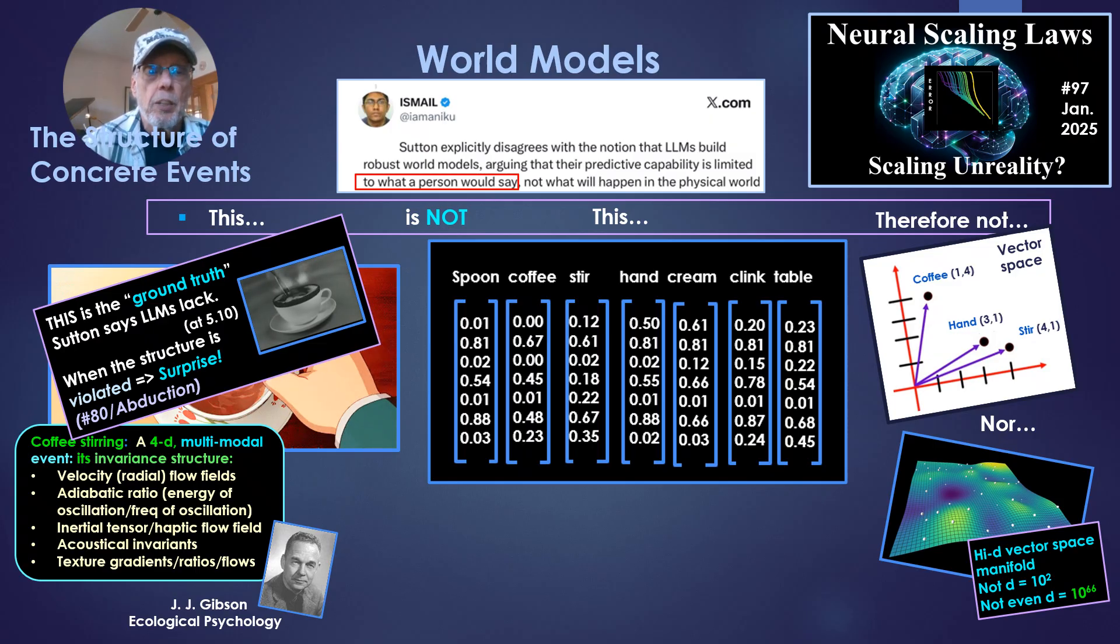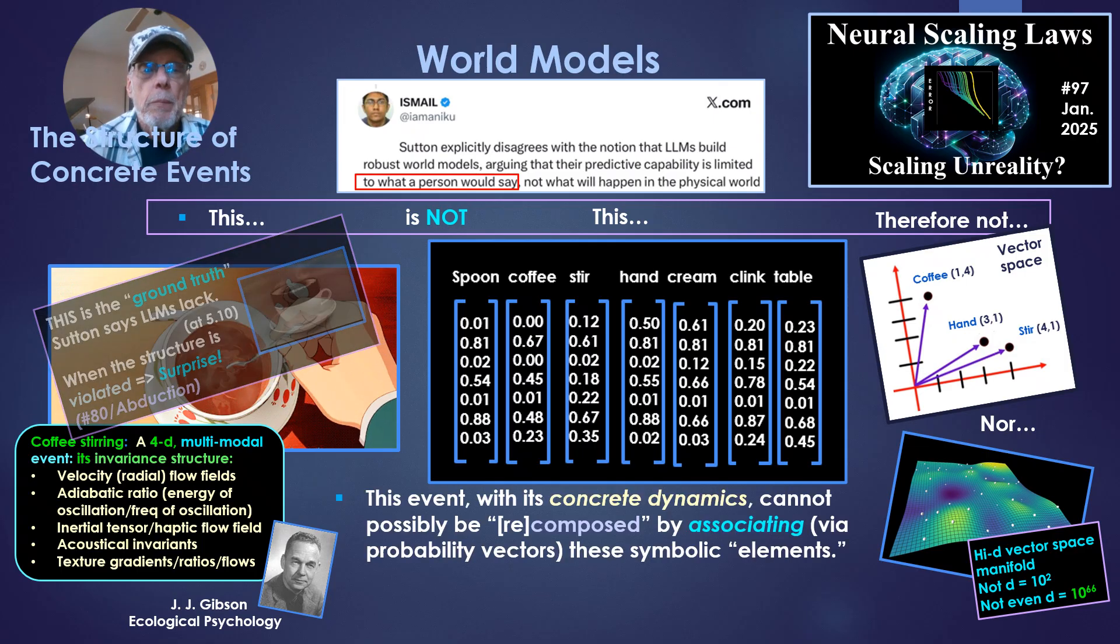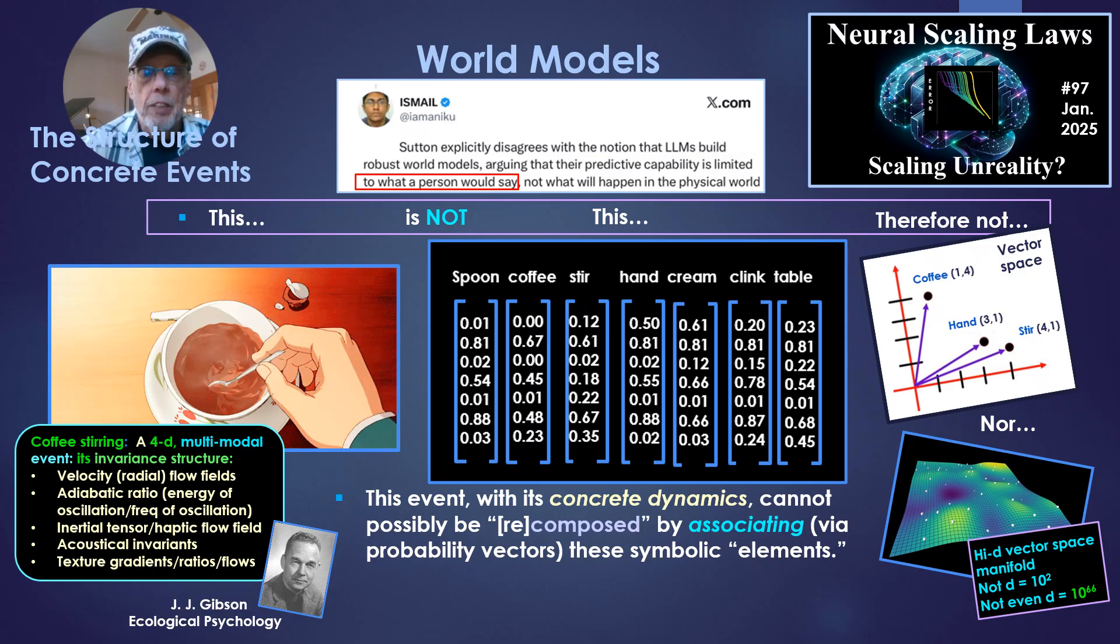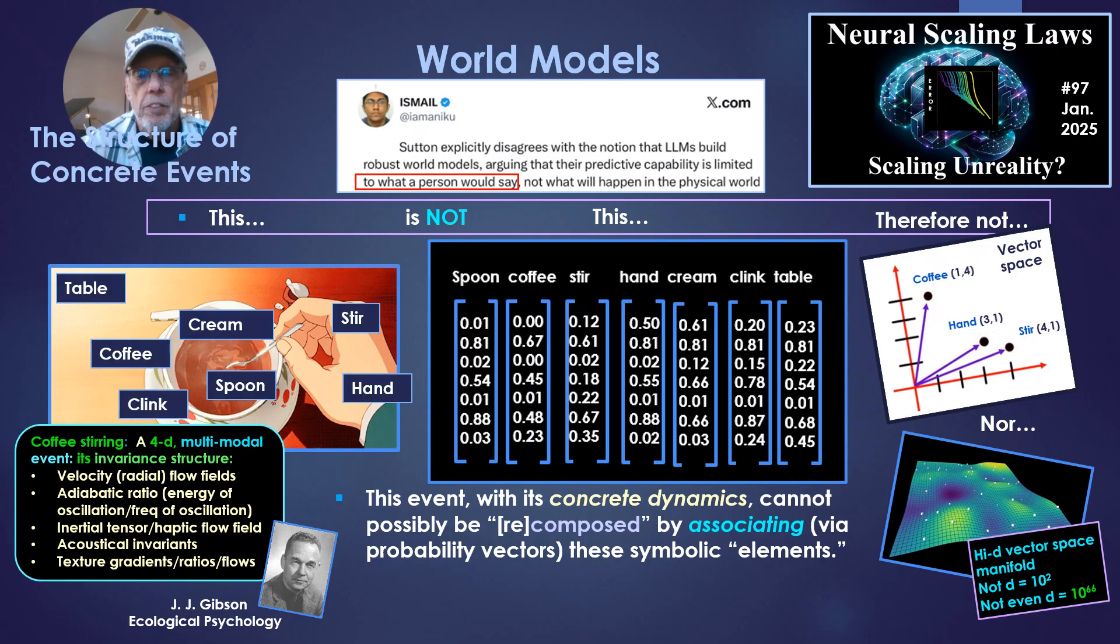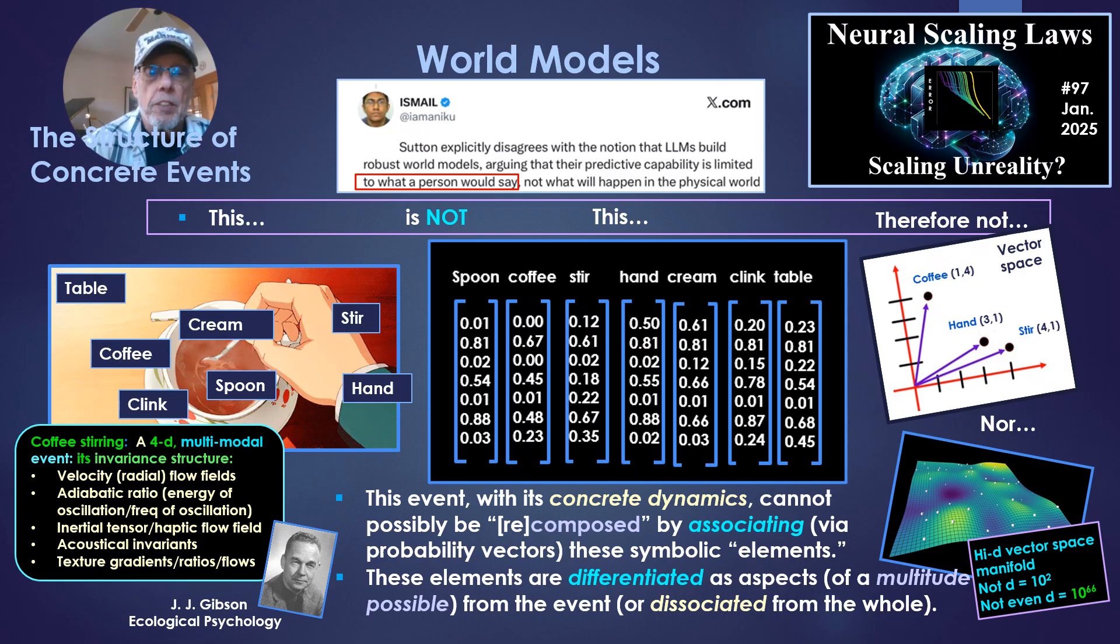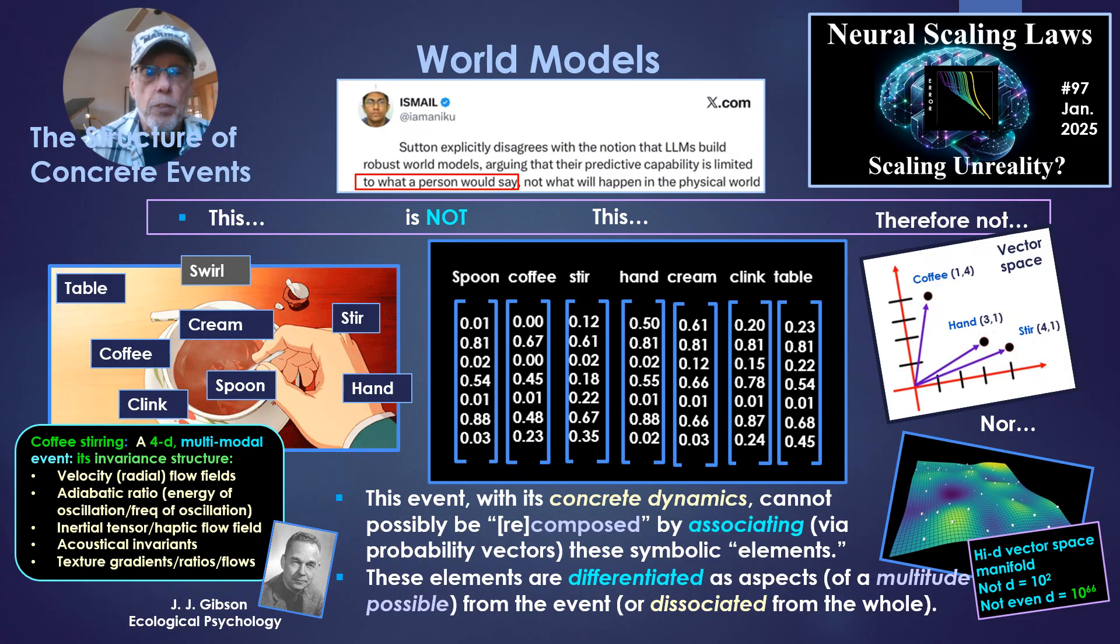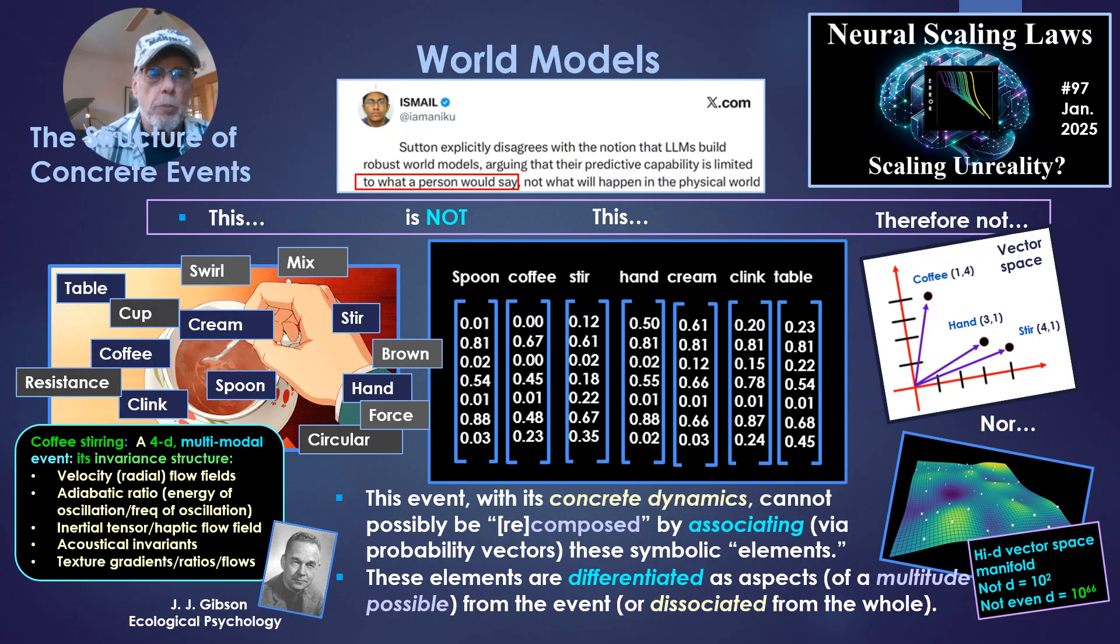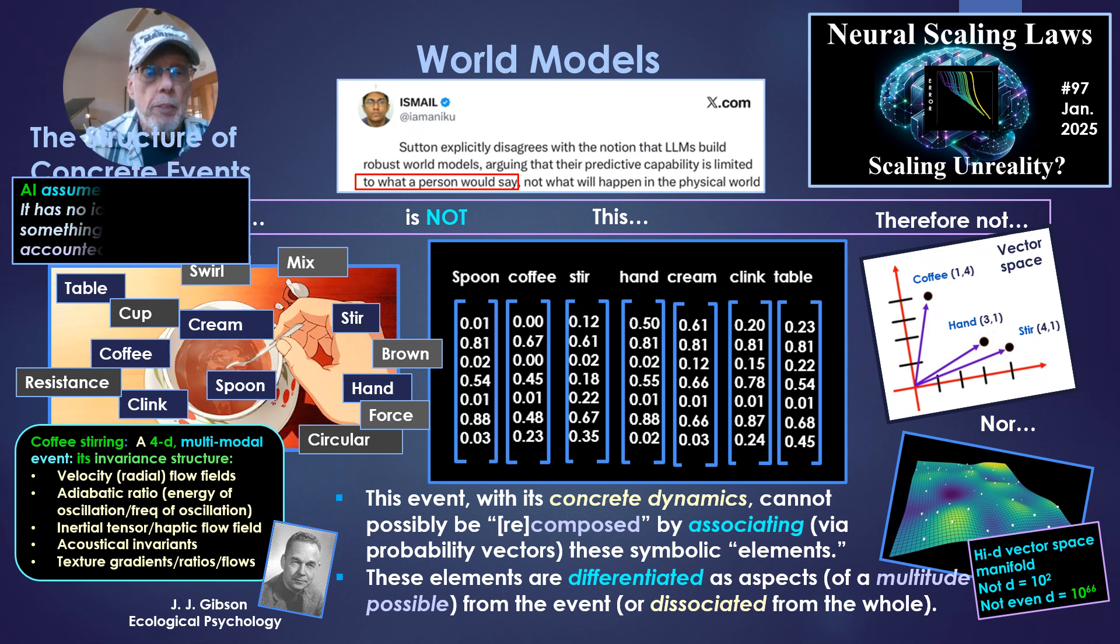And when the structure is violated, take a little cup there that's going up and down an inch above the edge, there's surprise. I talked about this in number 80 on abduction, a key aspect of abduction. So this event, with its concrete dynamics, cannot possibly be recomposed by associating, via probability vectors, these symbolic elements that we identify in the event. These elements are just differentiated as aspects of a multitude possible from the event, or they're dissociated from the whole.